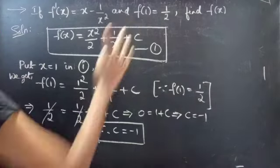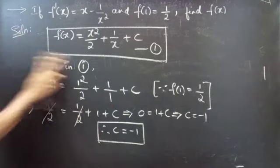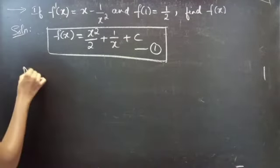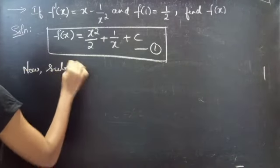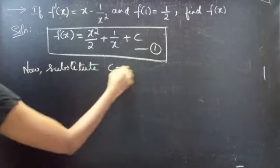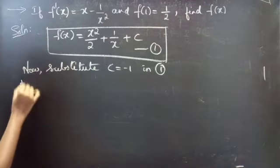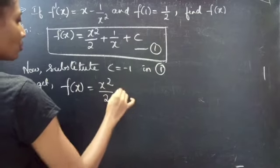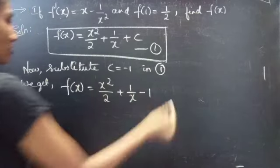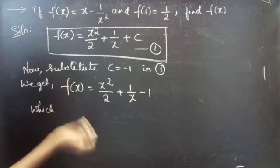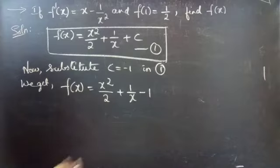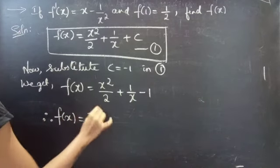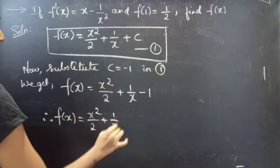Now substitute c equals minus 1 in equation 1. We get f(x) equals x squared by 2 plus 1 by x minus 1, which is the required solution. Therefore, f(x) equals x squared by 2 plus 1 by x minus 1.